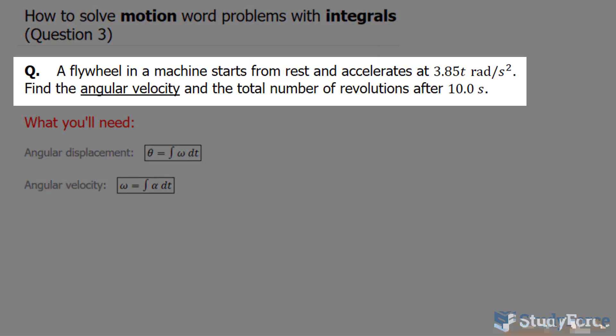The question reads, a flywheel in a machine starts from rest and accelerates at 3.85 t radians per second squared. Find the angular velocity and the total number of revolutions after 10 seconds.